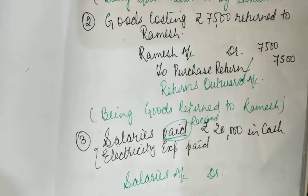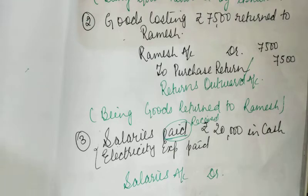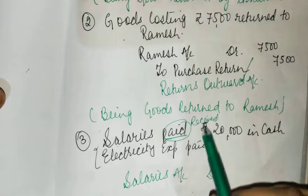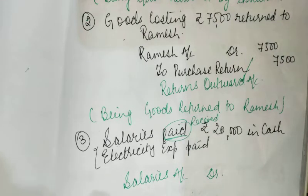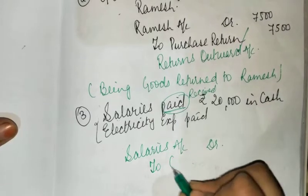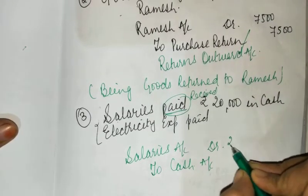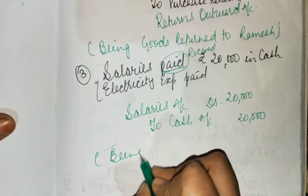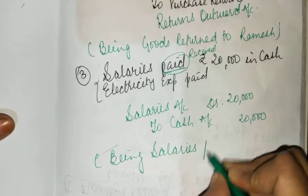If instead of 'paid', the word 'received' appears, it means salary is income for you. Then the Nominal Account rule says credit all income and gains, so we would credit salary instead. Since here we have salary paid, we debit it. The entry is: Salary Account Dr to Cash, Rs. 20,000. Narration: Being salaries paid.